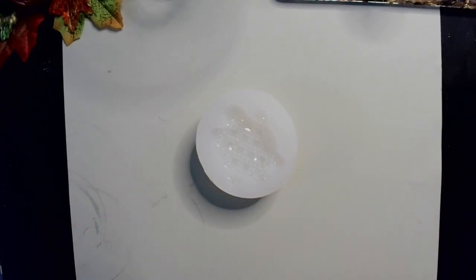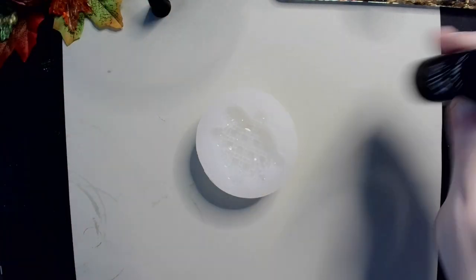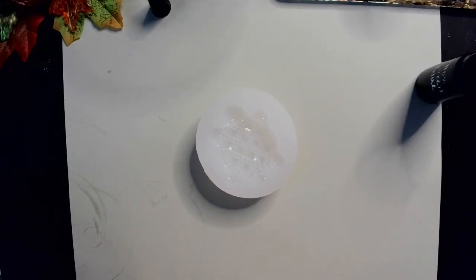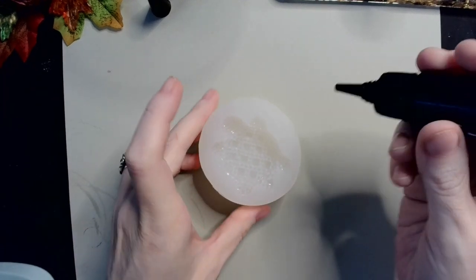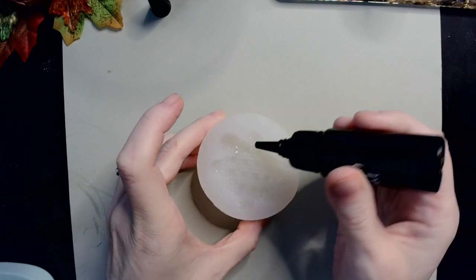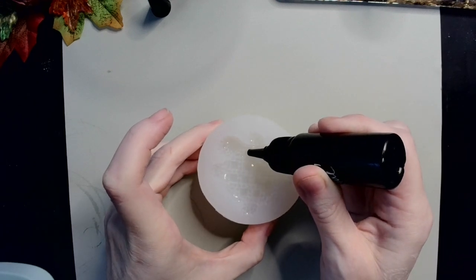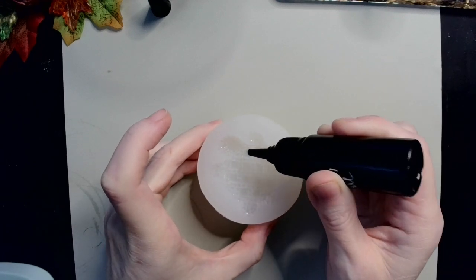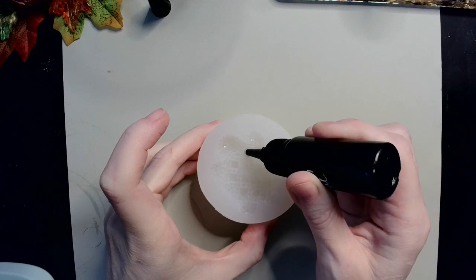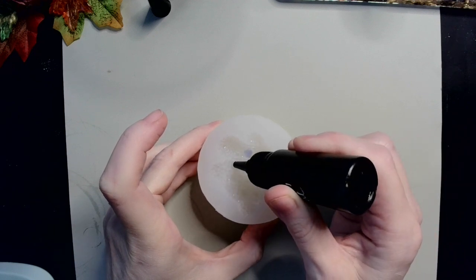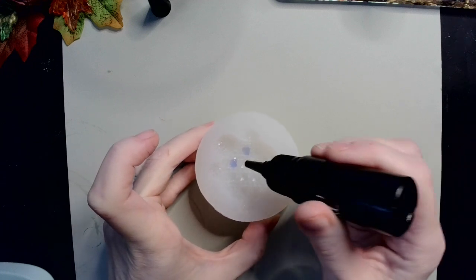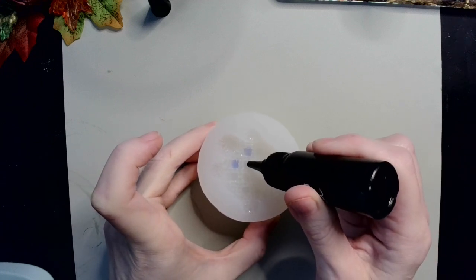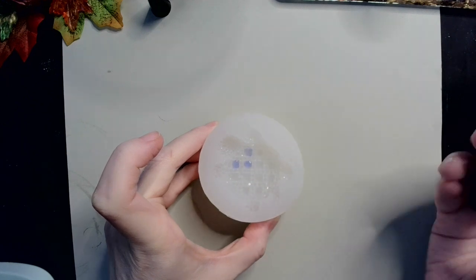So to get things started, again, I have my Snow Queen Blue UV resin that I made, and I'm just going to go in and start filling up those little squares. And I'm just going to do a couple of them at a time because I don't want them to run all over the place.